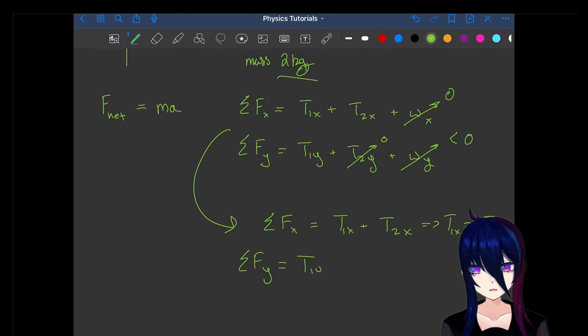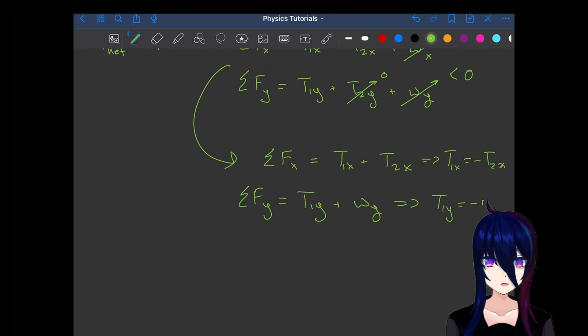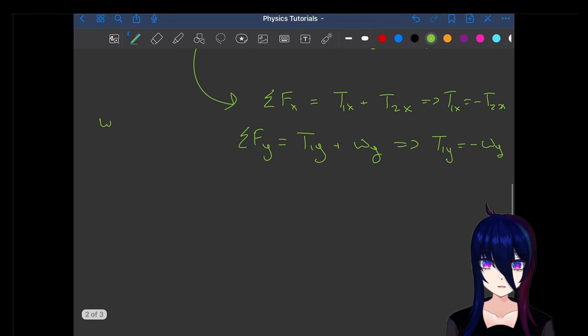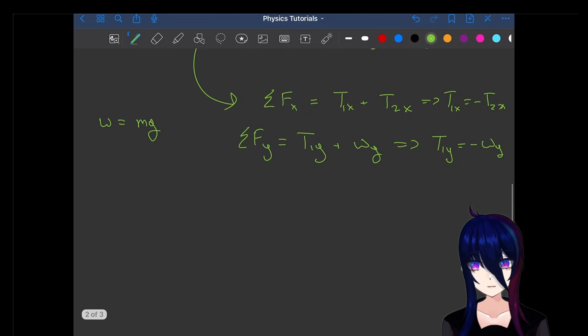So FY component is equal to T1Y plus Y of the weight. That gives us that T1Y is equal to the negative Y component of the weight. So the weight is going to equal mass times gravity. Pretty standard.